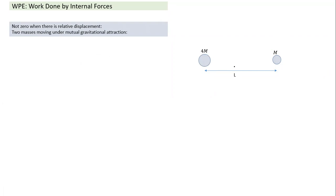If two masses are moving under mutual gravitational force of attraction, the direction of displacement itself is opposite, so there is relative displacement. The gravitational force FL = G·4m·m / L² acts in opposite directions on each mass. Let's understand three cases.